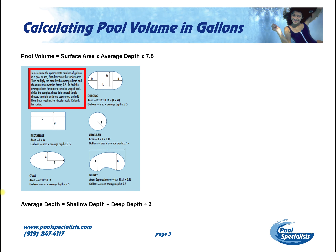Let's get on to calculating the pool volume in gallons. You might be able to Google this and get a fancy calculator. But the simplest way: if you have a rectangular pool, the surface area is length times width. If you have a circular pool, it is the radius squared times pi, or 3.14. For oblong or kidney-shaped pools, the calculations get a little more complicated.